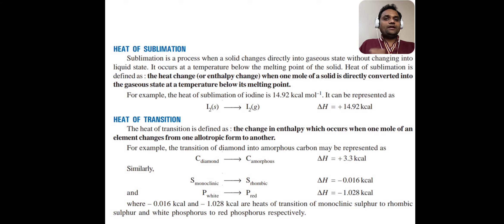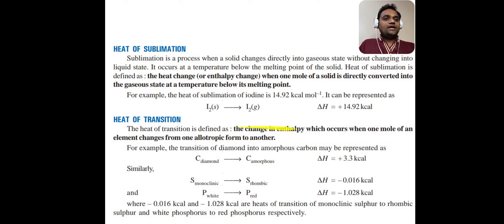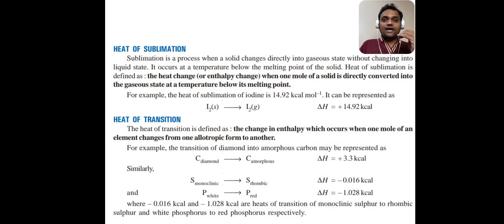Now the second point: heat of transition. Heat of transition is defined as the change in enthalpy which occurs when one mole of an element changes from one allotropic form to another. The change in enthalpy which occurs when one mole of an element changes from one allotropic form to another.